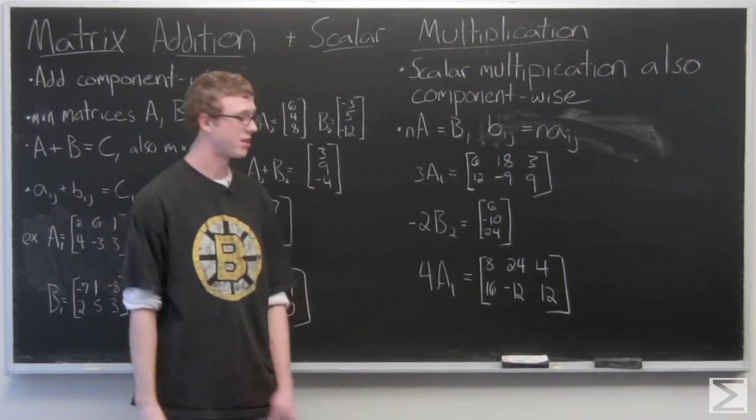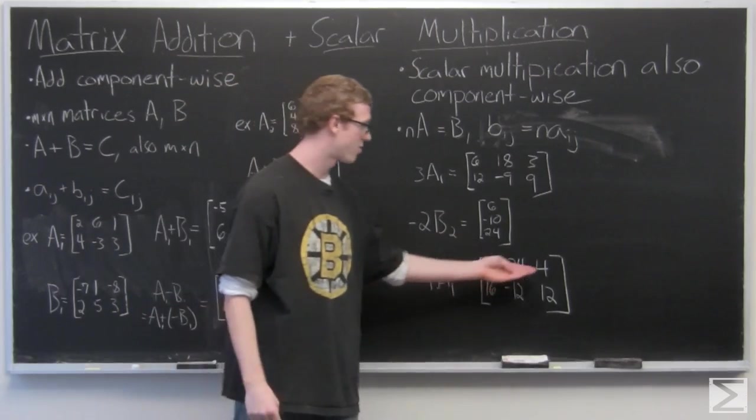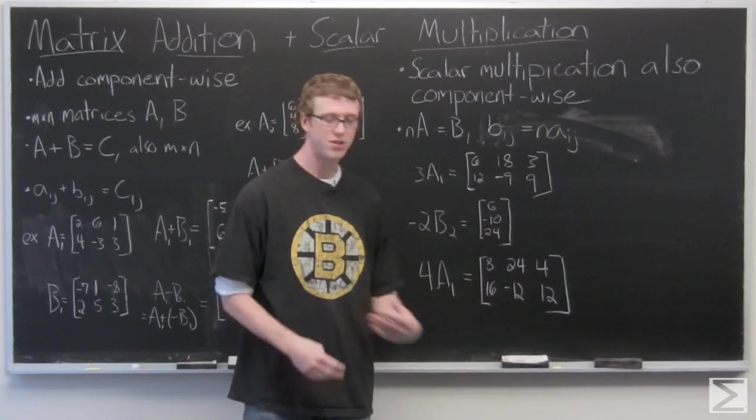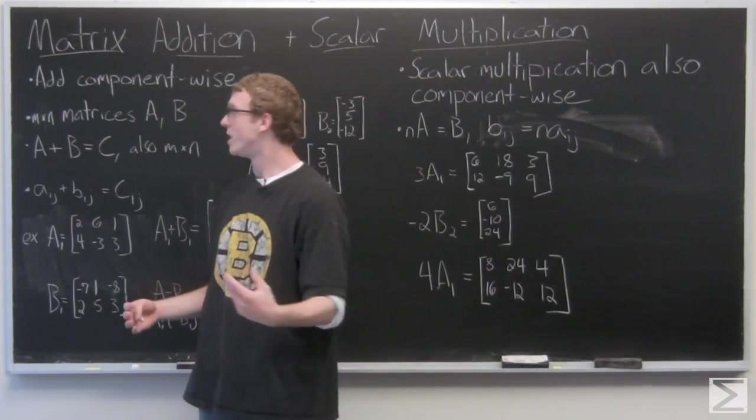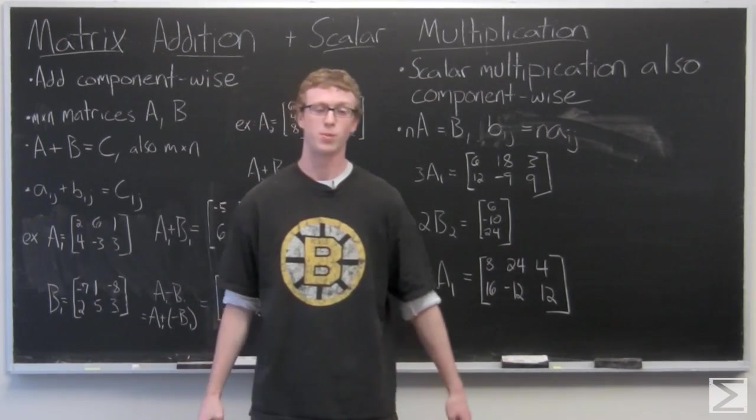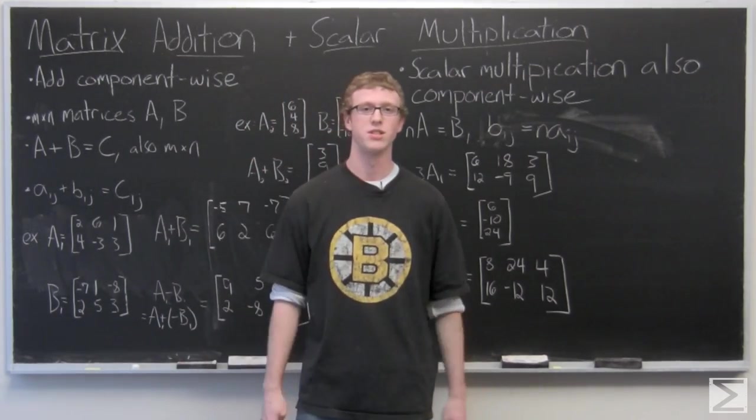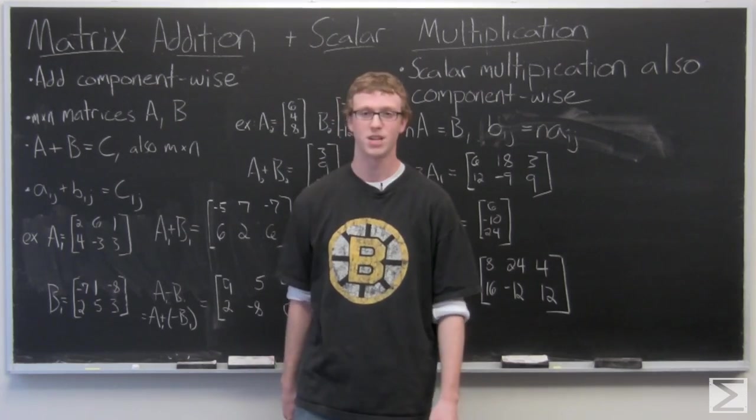And the result matrix, again, another two by three matrix: 8, 24, 4, 16, negative 12, 12. So again, matrix addition and scalar multiplication, very simple. Make sure you're doing it component-wise. And make sure that you're always adding matrices of the same size.